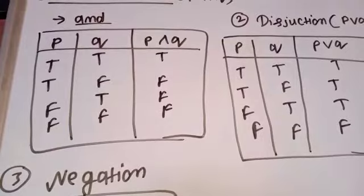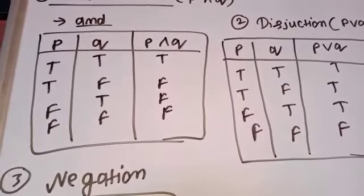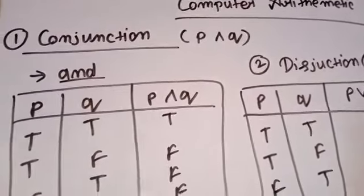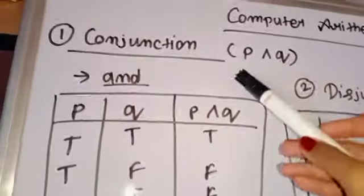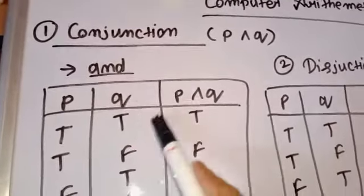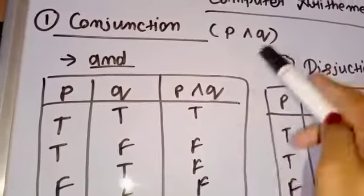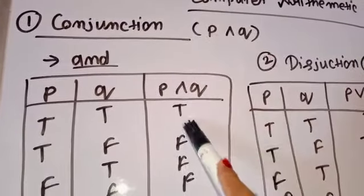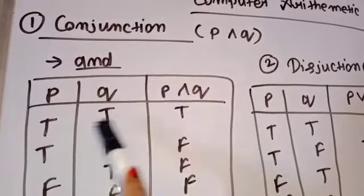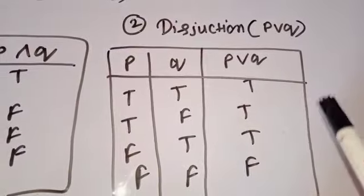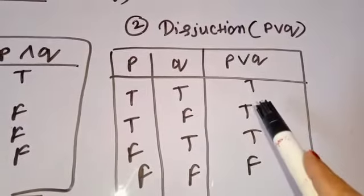P and Q — AND means we need to understand some logic about what happens in AND. This is P AND Q. AND means both should be correct. The result of the AND operator will be true if both operands are true. And the result of disjunction will be true if any one of the operands is true.